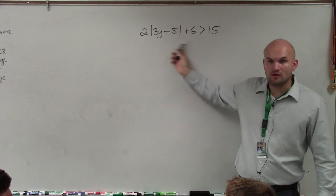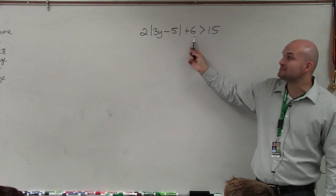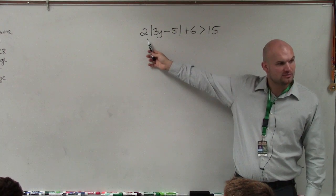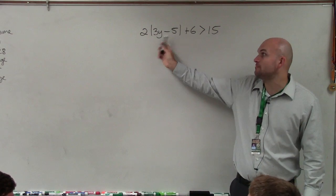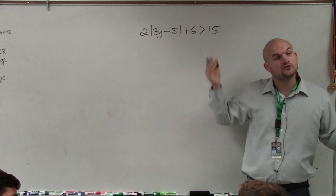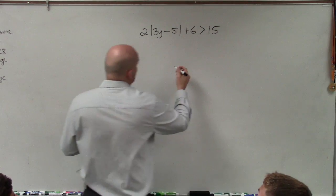So you can see, regardless of what's inside the absolute value, my absolute value is being added by 6 and multiplied by 2. Does everybody see that? Just the absolute value. Forget about what's inside of it. It's being multiplied by 2, added by 6. So we need to undo that before we do any work for this inequality.